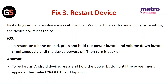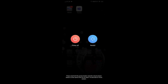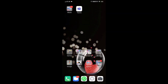Fix 3: Restart device. Restarting can help resolve issues with cellular, Wi-Fi, or Bluetooth connectivity by resetting the device's wireless radio. For iOS, to restart an iPhone or iPad, press and hold the power button and the volume down button simultaneously until the device powers off, then turn it back on. For Android, to restart an Android device, press and hold the power button until the power menu appears, then select Restart and tap on it.